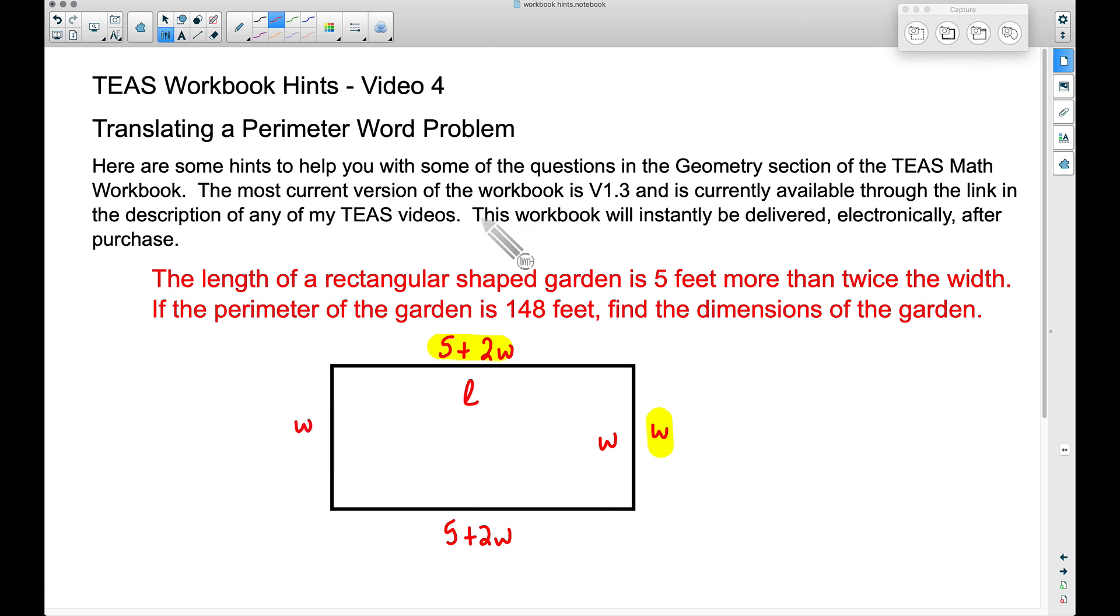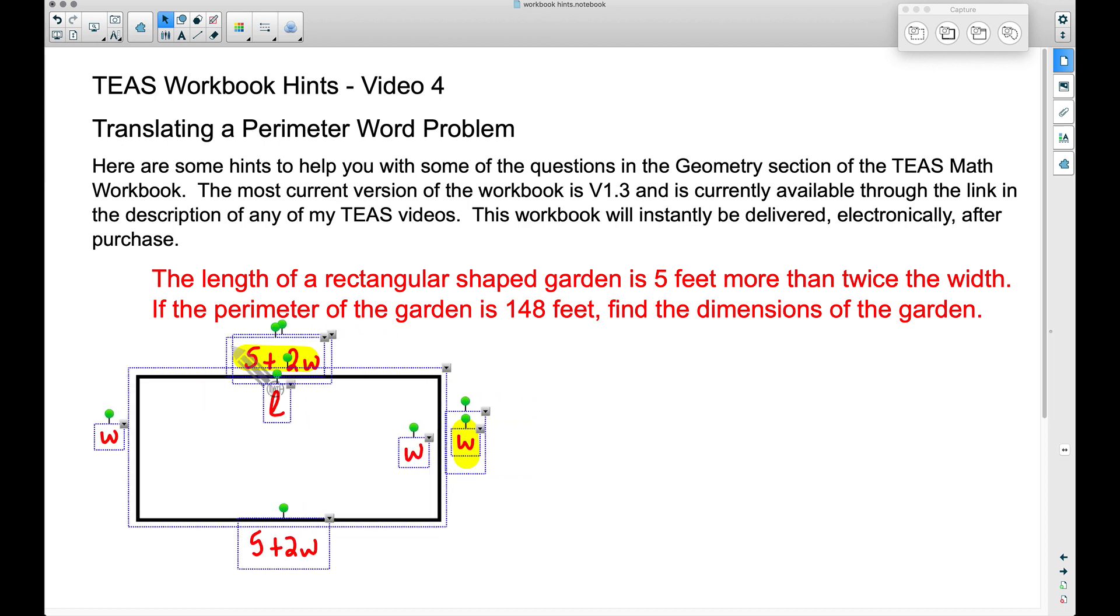If this is 5 plus 2W, this will also be 5 plus 2W. And if this is W over here, you have W over here. Now let's talk about the perimeter. You can find the perimeter of any shape by adding up all of the sides.